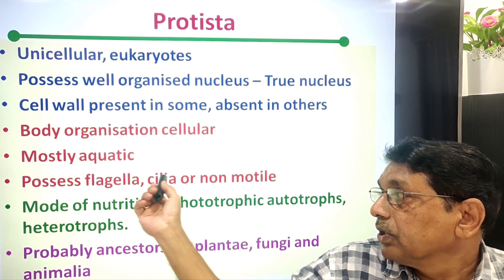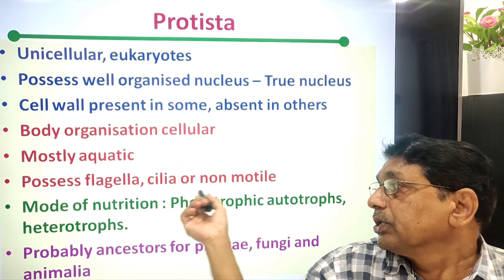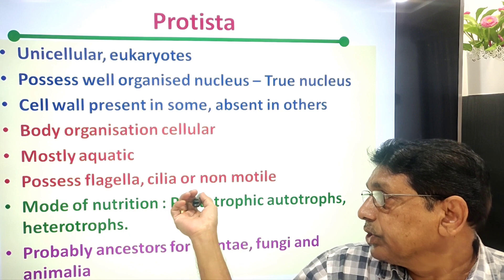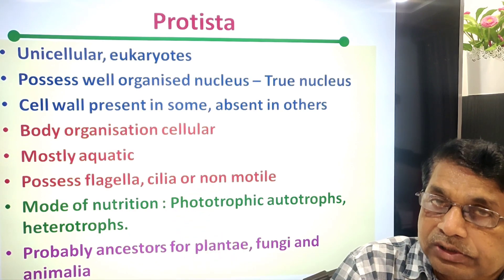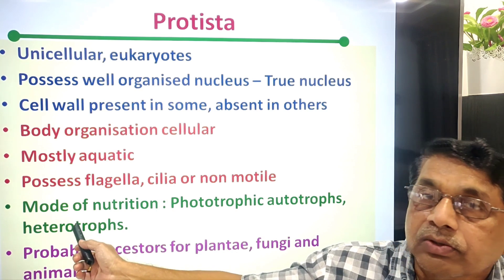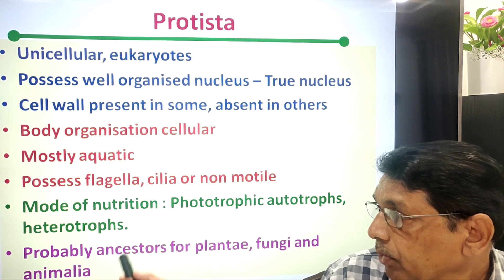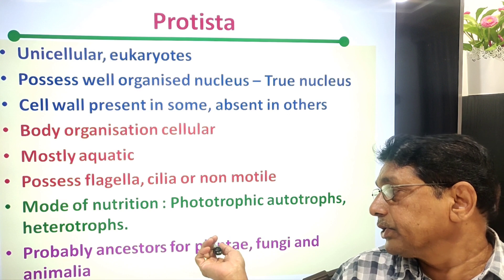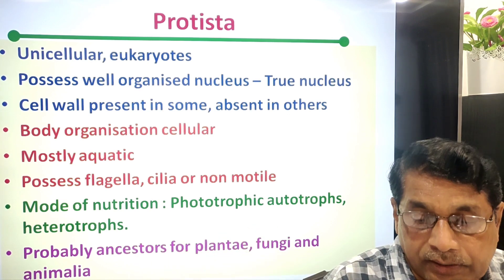They possess flagella or cilia as locomotory organs, or are sometimes non-motile. Mode of nutrition may be phototrophic (autotrophic) or heterotrophic; in heterotrophs we find parasitic forms. They are probably the ancestors of present-day plants, fungi, and animalia.